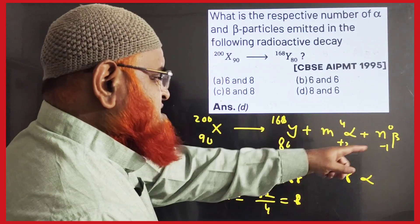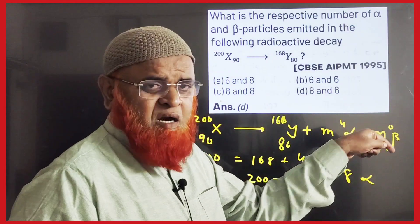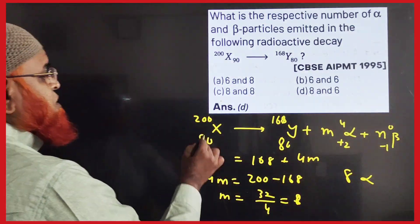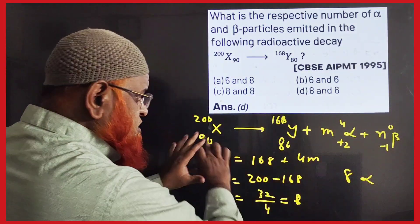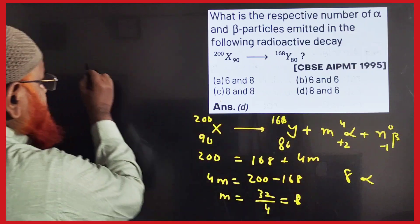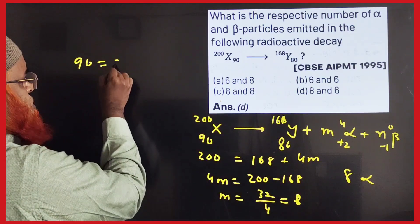So 8 alphas have been ejected. How many betas are ejected you have to find out now. Very simple here, you can just take the atomic number. Just previously we took the mass numbers, now you take the atomic numbers. 90 is equal to 80